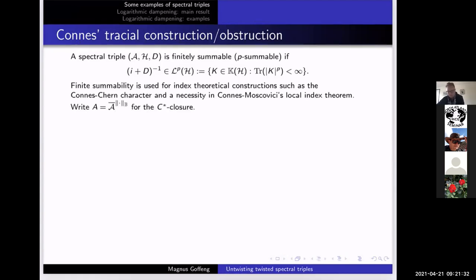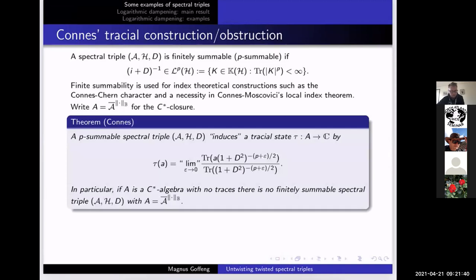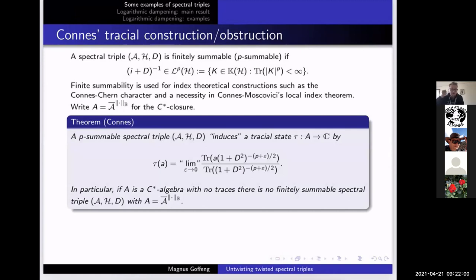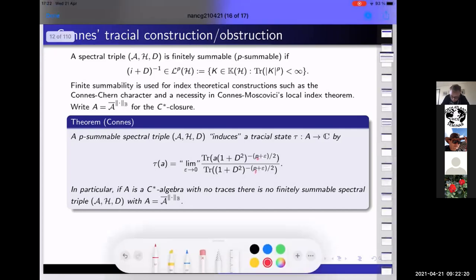Let's write A for the C*-closure of the curly A appearing in the spectral triple. There's a really nice construction by Connes: if you have a finitely summable spectral triple, you can from this construct explicit tracial states. The construction is roughly that you take the trace against a suitable negative power of D. If you take a negative enough power, you have something which is trace class, and then you sort of get to a critical point. This should not really be p — this should probably be a p₀, where p₀ is the infimum of all the possible p's for which it is p-summable.